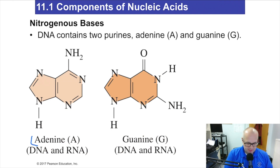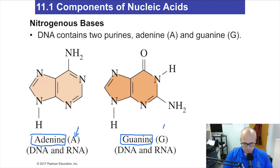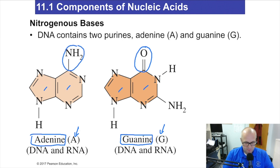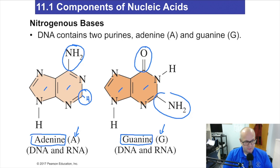Here is your first nitrogenous base: adenine, abbreviated with the letter A. This is a purine. Both adenine and guanine — abbreviated G — are purine bases because they share that two-ring system. Notice they're different: here we have a carbonyl, and on the same carbon over here we have an amine. Notice adenine has an NH2, while guanine has simply a hydrogen there. They're quite different, but still categorized as purines.